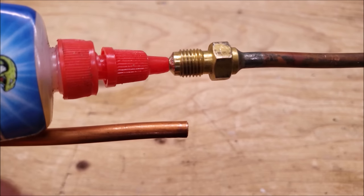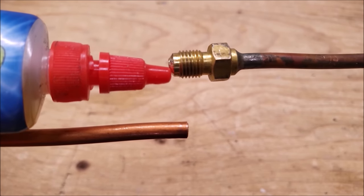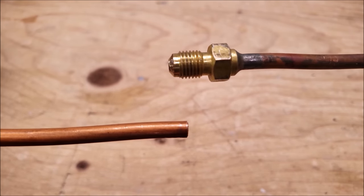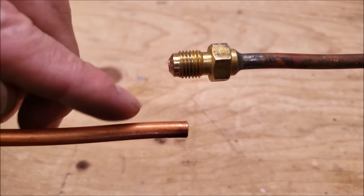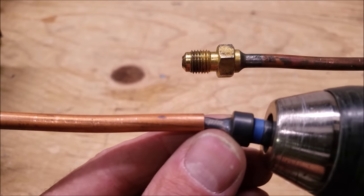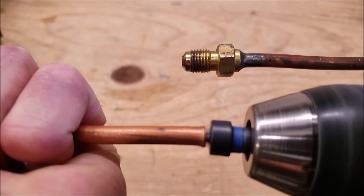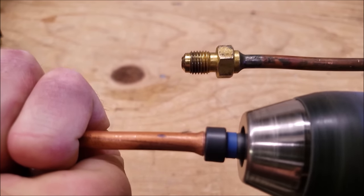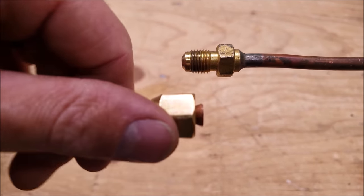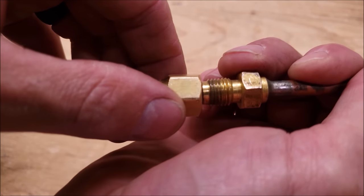Then we want to put our nylog or our refrigerant oil on the flare face. You want to make sure that you don't put a whole lot on, just enough to help seal that joint and also to help the copper glide along the face to make its flare. This joint is very hot right here, so you want to make sure that you don't touch that.